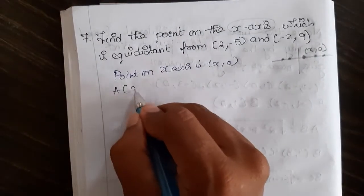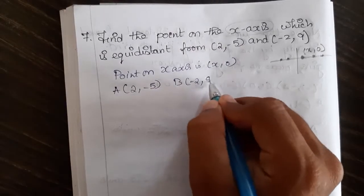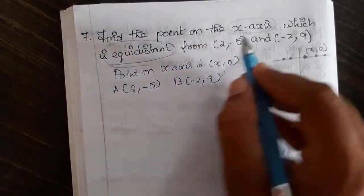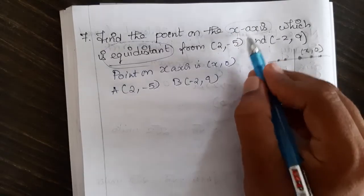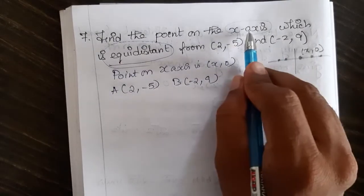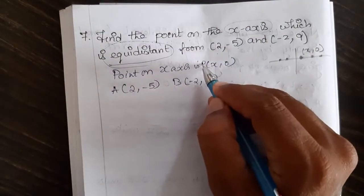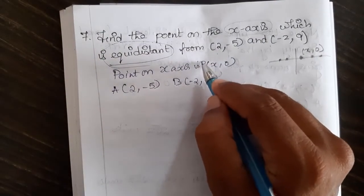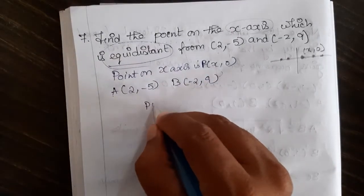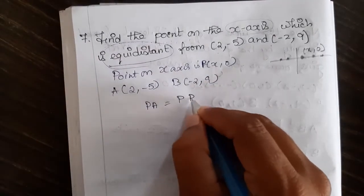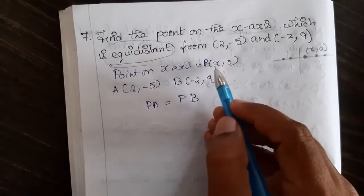Let me call point A as (2, -5) and point B as (-2, 9). The given condition is that it is equidistant from the x-axis, meaning the distance from (x, 0) to A equals the distance from (x, 0) to B. So PA will be equal to PB — that is what equidistant means.